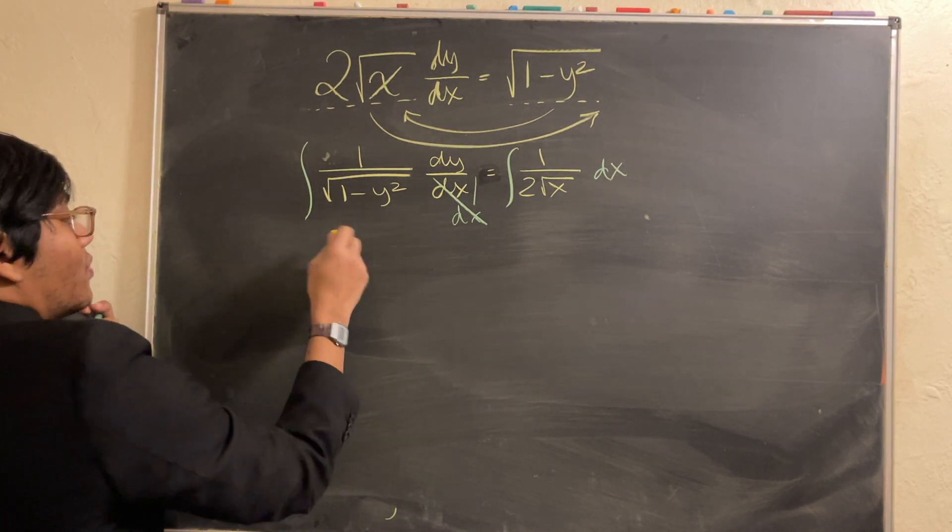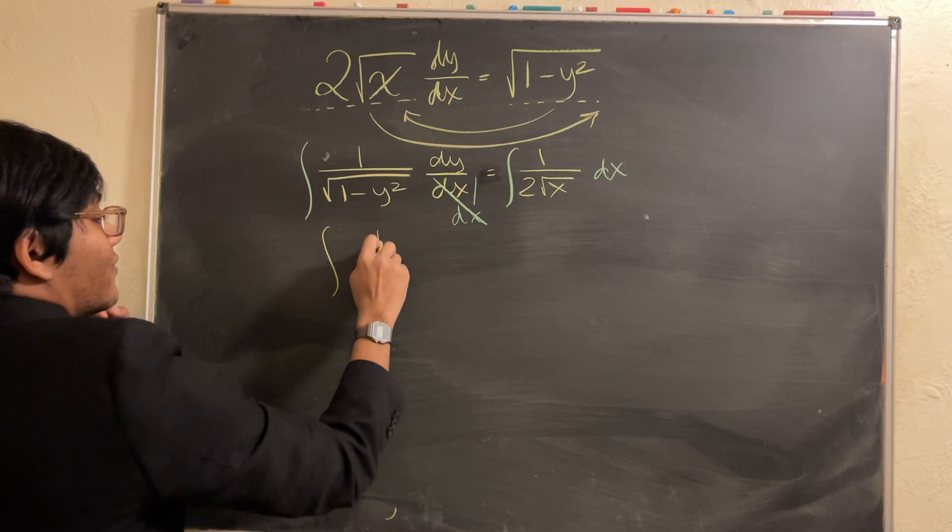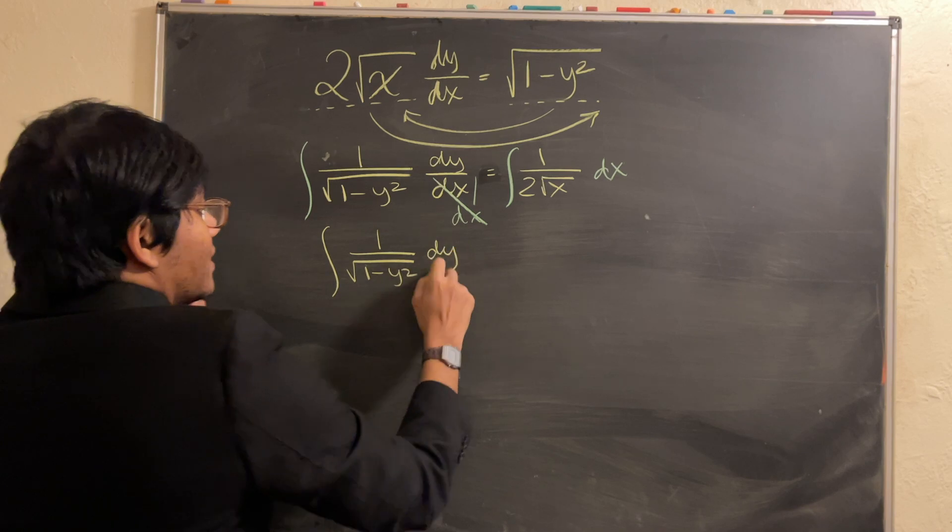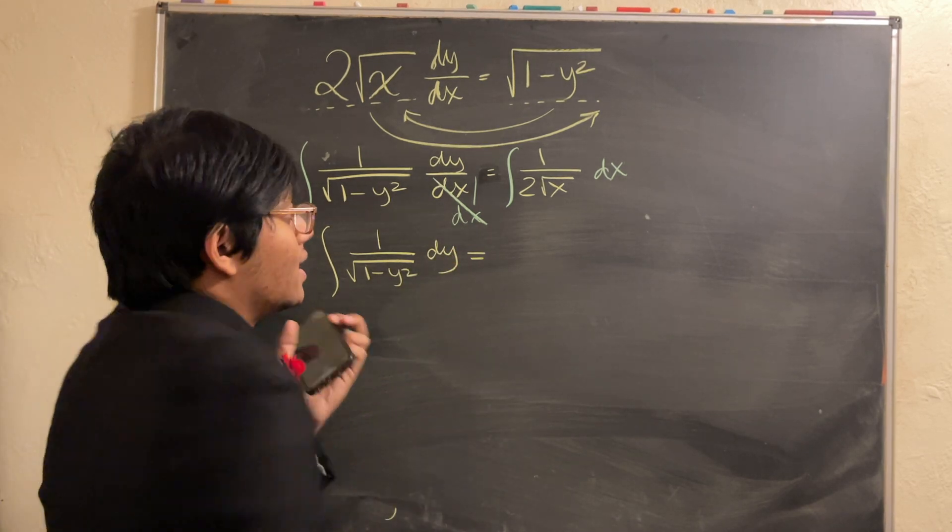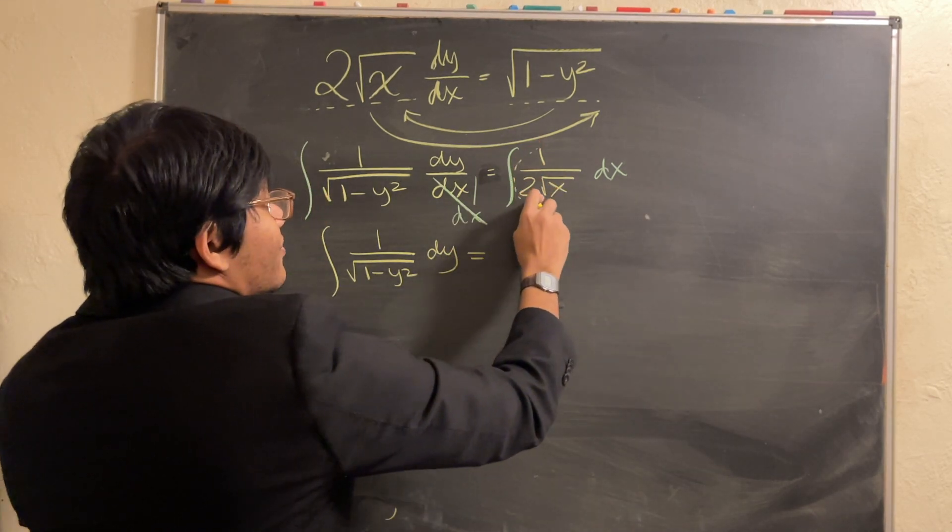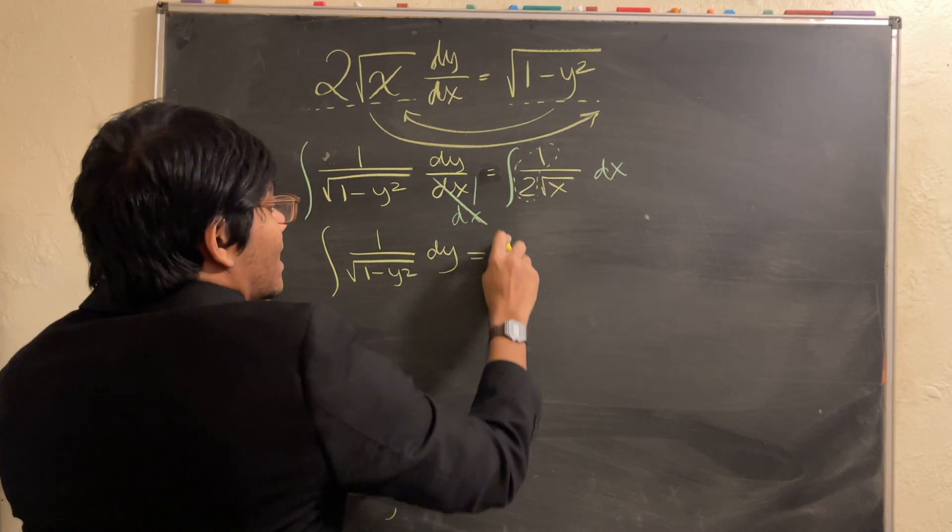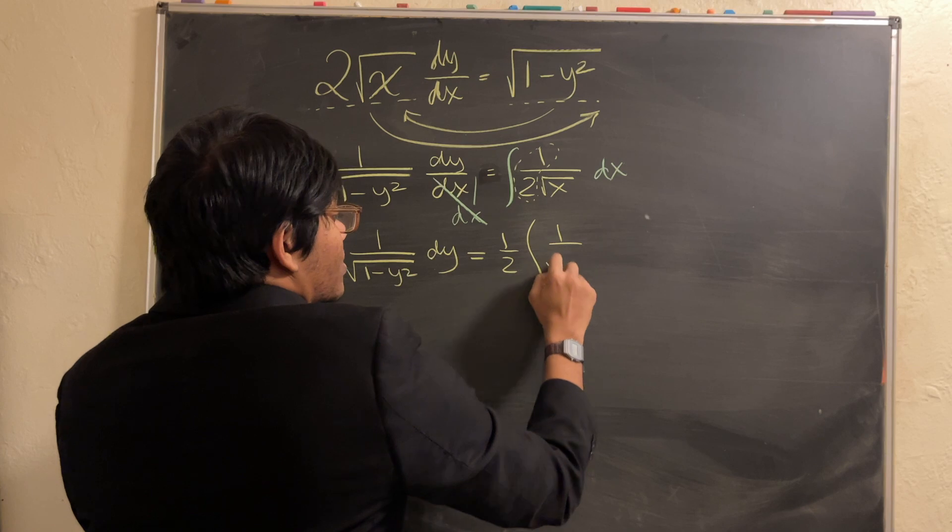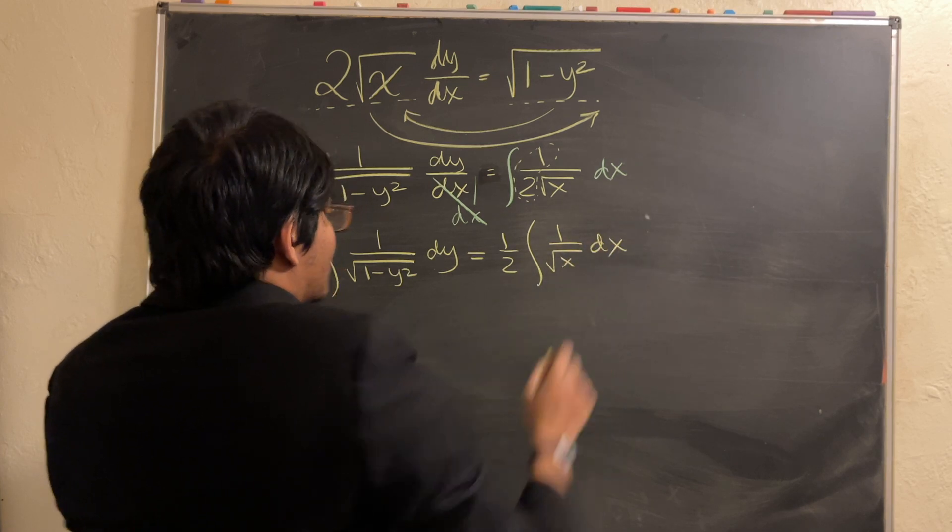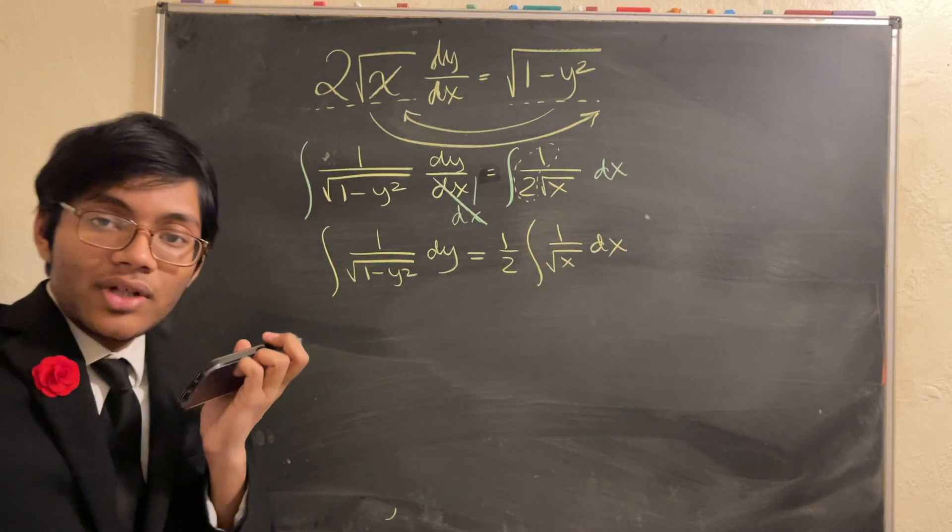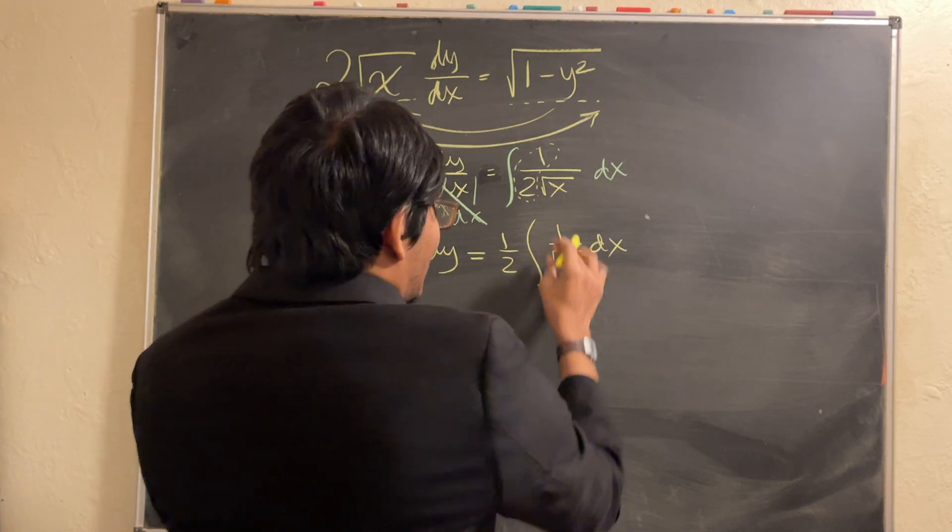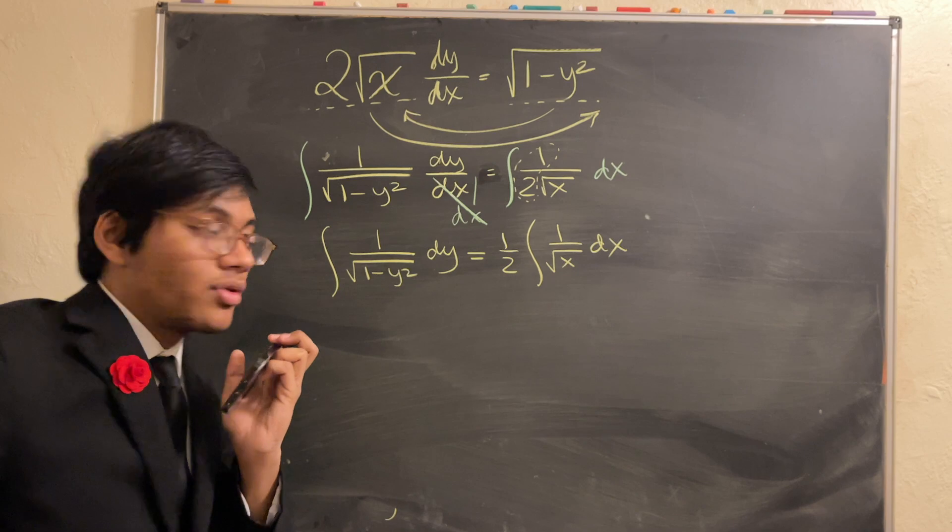So, on the left-hand side, without simplifying just yet, I'm going to have 1 over the square root of 1 minus y squared dy is equal to, I'm going to take out this constant factor of a half outside and integrate 1 over the square root of x dx. All right, so, let's first try to concentrate on the right-hand side. It looks a bit easier.